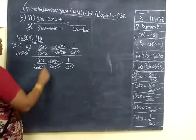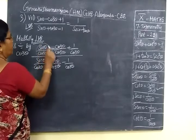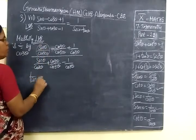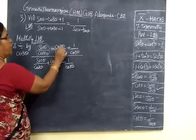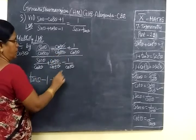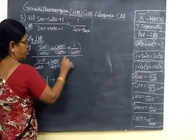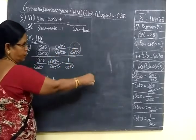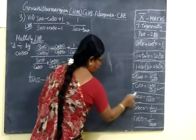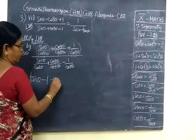So sin θ by cos θ is tan θ — the cos terms cancel. And 1 by cos θ is sec θ.